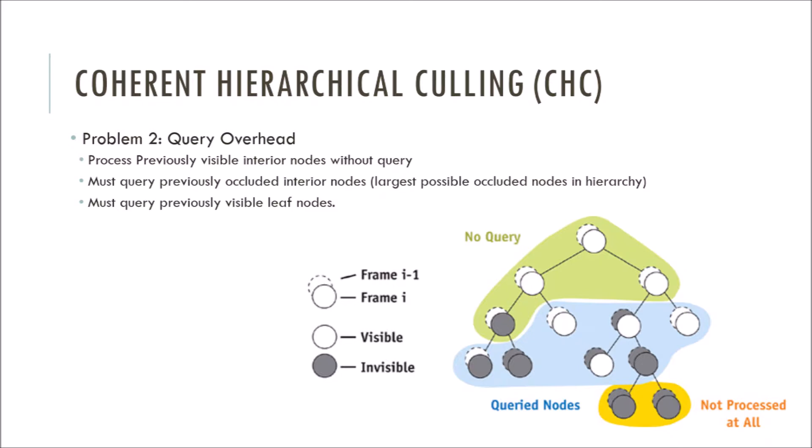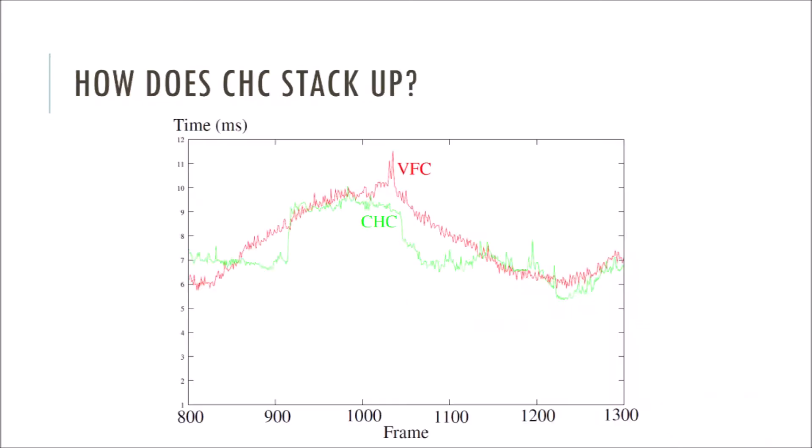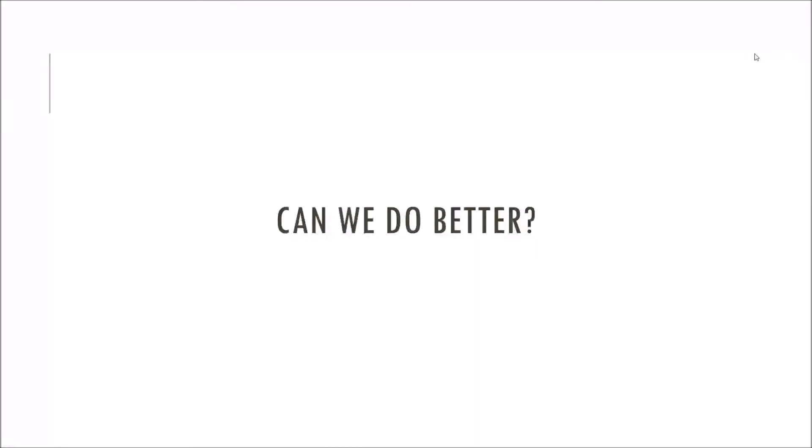So how does CHC stack up in terms of performance? Unfortunately, not that well. It works very well for scenes that have a lot of occlusion. However, on newer hardware where rendering geometry becomes cheap compared to querying, or viewpoints where much of the scene is visible, this method can become even slower than view frustum culling. This is a result of wasted queries and unnecessary state changes. So is there something else out there that can improve upon CHC? Can we do better?